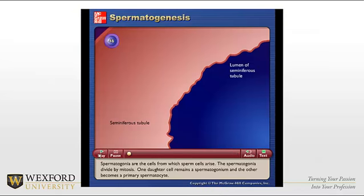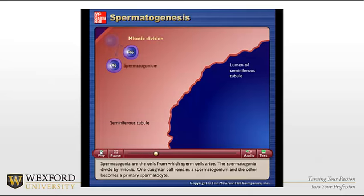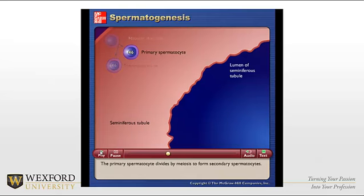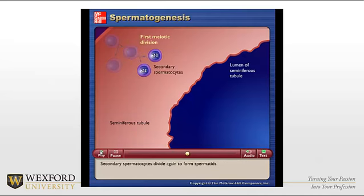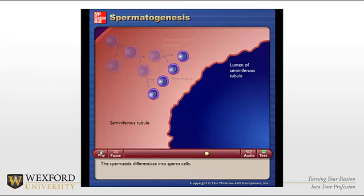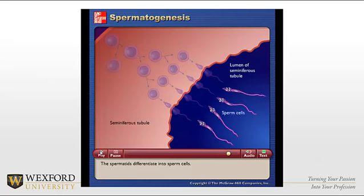Here's a quick animation on spermatogenesis. Spermatogonia are the cells from which sperm cells arise. The spermatogonia divide by mitosis — one daughter cell remains a spermatogonium and the other becomes a primary spermatocyte. The primary spermatocyte divides by meiosis to form secondary spermatocytes, which divide again to form spermatids. The spermatids then differentiate into sperm cells. The main point is just to get the concept of the four sperm cells being made from meiosis.